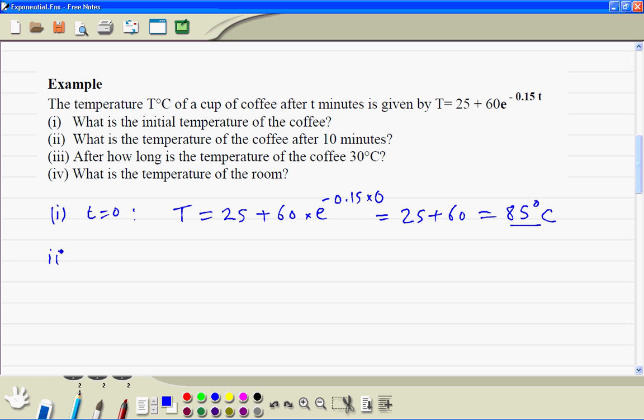Part 2: Put small t equal to 10, so we have capital T equals 25 plus 60 times e to the power, now this t is 10, so it's minus 1.5. Using your calculator, you should get the answer to be 38.4 degrees centigrade.